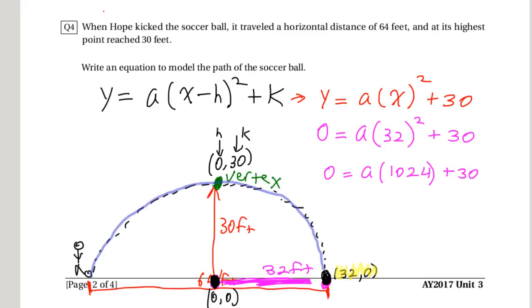So this means that this turns into 0 = a(1024) + 30. Now, my goal, I want to get a right here by itself, whatever that a is. Well, that's a solving problem. That means we deal with subtraction first. And that's going to give me that -30 = a(1024). But wait a minute, I want a by itself. So that means I'm going to divide both sides by 1024.